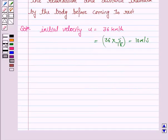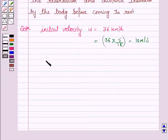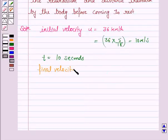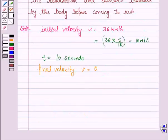We are given that the body is brought to rest in 10 seconds, so t equals 10 seconds and the final velocity v equals 0 because the body comes to rest. Now we have to find the retardation.